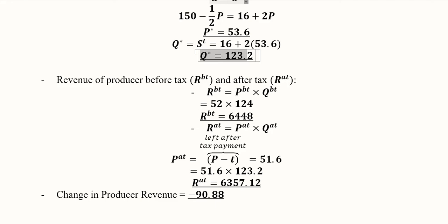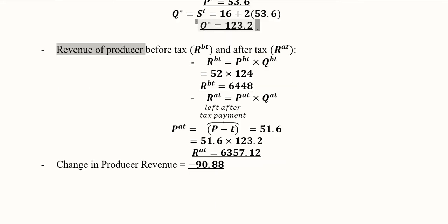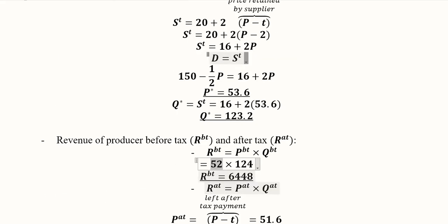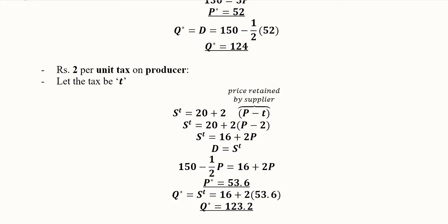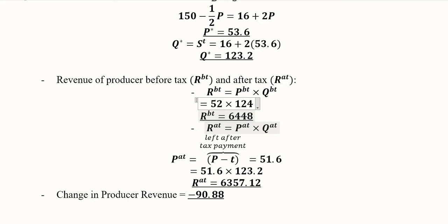We can now do further analysis on the producer's revenue before and after tax, since revenue is an important variable for determining profit. Revenue before tax is simply the product of the price and output before tax. We have already found these two values: price before tax is 52 and output before tax is 124, giving us the revenue before the imposition of tax.